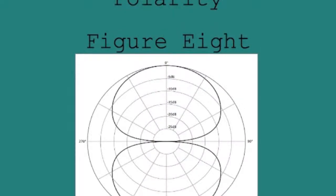The next polarity shape is the figure eight pattern, which as you can see, is in the shape of a figure eight. It picks up in the front and back, but not on either side.